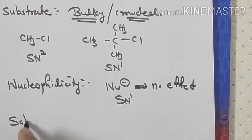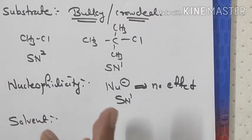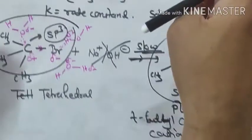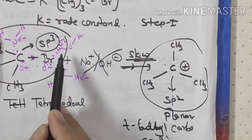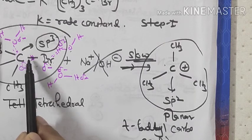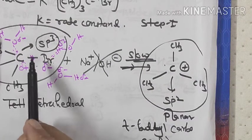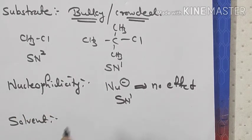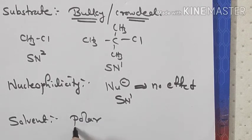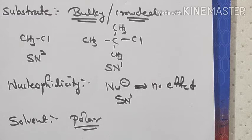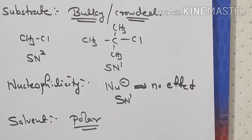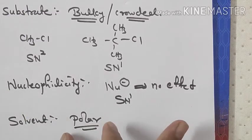The third factor is solvent. In SN1, the C–Br bond breaks due to a polar solvent like water. The polar solvent facilitates dissociation and carbocation formation easily. So for SN1, the solvent should be polar. In contrast, for SN2, the solvent should be non-polar. These are the main factors affecting the rate of SN1 reaction.